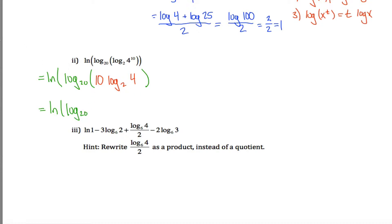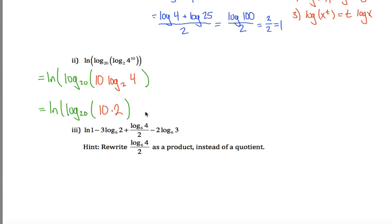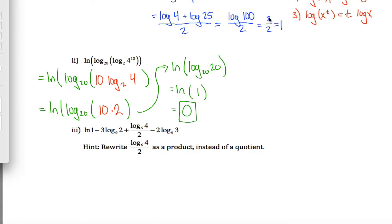The log base 2 of 4 is just a number — it's asking to what power must you raise 2 to make it equal to 4. Well, 2 to the second power is 4, so the log base 2 of 4 is just 2. That's just 10 times 2, which is 20 inside. So this question is really asking: what is the natural log of the log base 20 of 20? The log base 20 of 20 is 1, since 20 to the first power is 20. And the natural log of 1 is 0, since e to the 0 power equals 1. So the answer is 0.